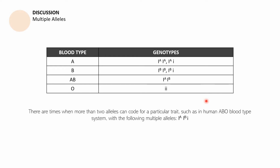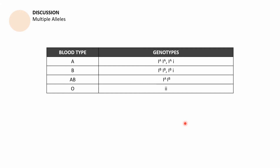What are multiple alleles? Usually, alleles come in pairs — uppercase T for tallness and lowercase t for shortness, for example. Uppercase usually indicates dominant and lowercase indicates recessive. In the ABO blood type system, antigen A and B are considered dominant over antigen O, which is represented by lowercase i. There are times when more than two alleles can code for a particular trait. In the human ABO blood type system, the alleles are I^A, I^B, and i. Both antigens A and B are dominant over i, which is why they are written in uppercase.